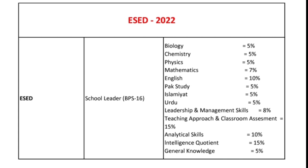100 marks کے test میں: Biology, Chemistry, Physics کے 55% marks ہیں، Mathematics کے 7% ہیں، English 10%، Pakistan Studies/Islamiyat/Urdu 5% ہیں، اور Leadership & Management Skills، Teaching Methods، Classroom Assessment یہ سب B.Ed plus 15 marks کا حصہ ہیں۔ Analytical Skills اور Intelligence Quotient بھی زیادہ تر B.Ed کے courses سے ہیں اور یہ بھی 10 marks ہیں۔ یعنی 10، 15، 15، 30، 40، 48 marks B.Ed کو touch کر رہے ہیں - تب ہی میں نے کہا کہ B.Ed کو زیادہ touch کیا گیا ہے۔